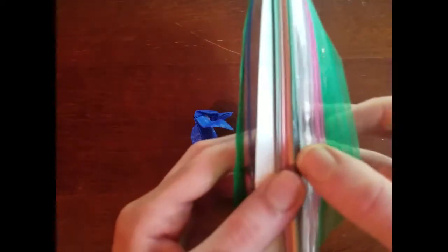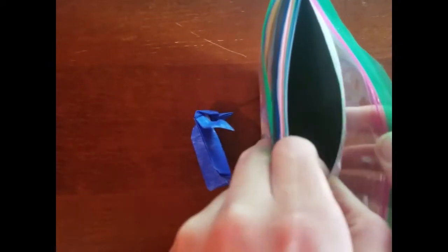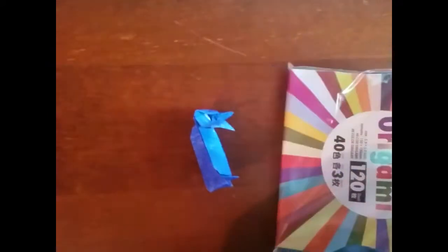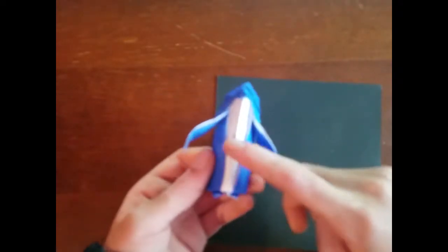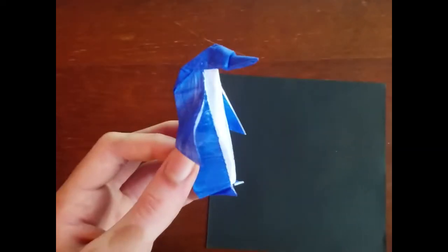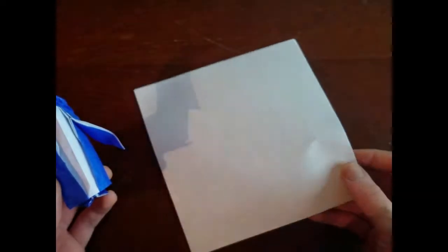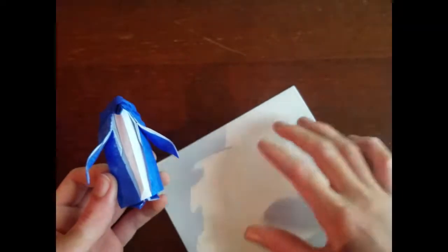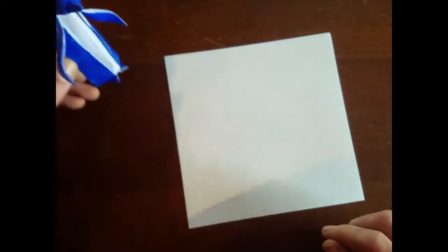I'm going to be using black, and make sure that your paper is dual colored. That way you'll get this nice color change on his tummy. Any paper, any size will work. You can even make a really small one. Let's get started now.